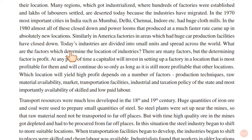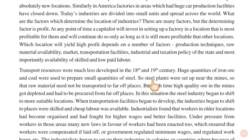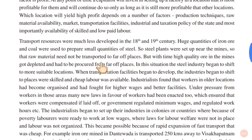The biggest factor for an industry is profit. If profit is not visible at a location, they shift their entire factory to another place where they can get more profit. Transportation facilities, industrial and taxation policies of the state are also important. The most important thing is availability of skilled and low-paid labor. If skilled labor is available and wages are low, industries may shift to that location.